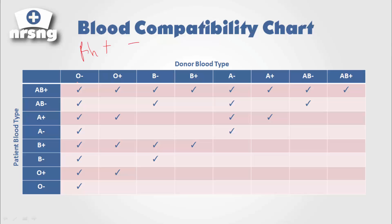O negative is the universal donor, and AB positive is our universal recipient.